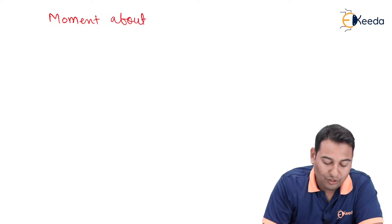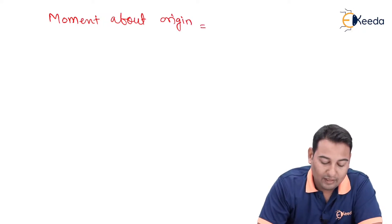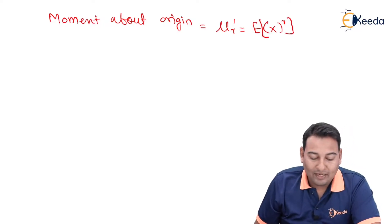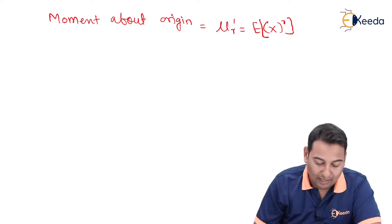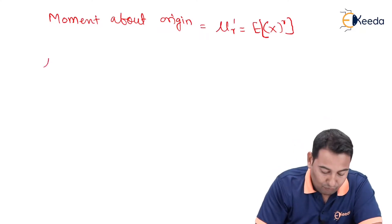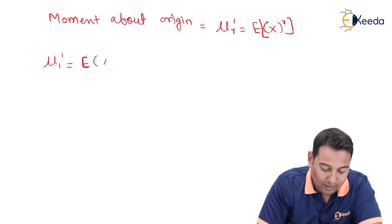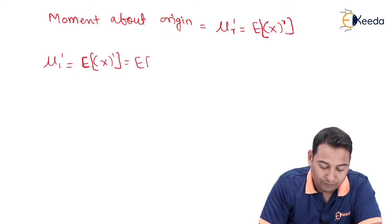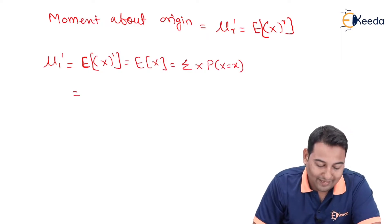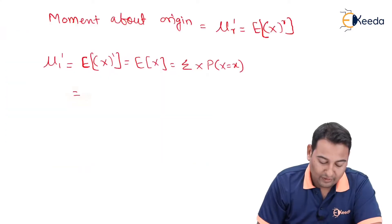The formula for moment about origin is mu r dash, which is equal to the expectation of x raised to r. Since the first four moments are asked, I'm going to replace r with one, two, three, and four. Mu one dash will be the expectation of x raised to one, which is E(x), equal to the summation of x into p of x.